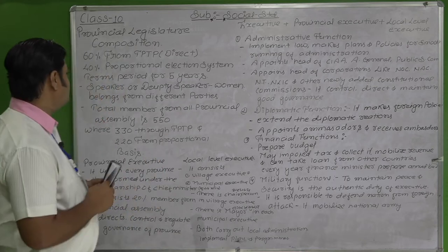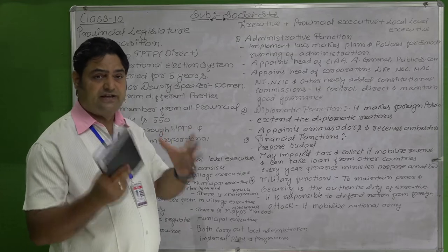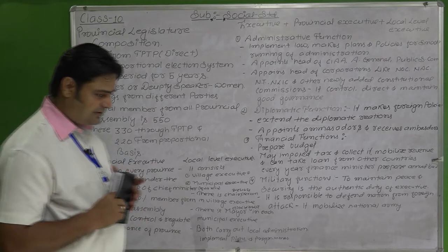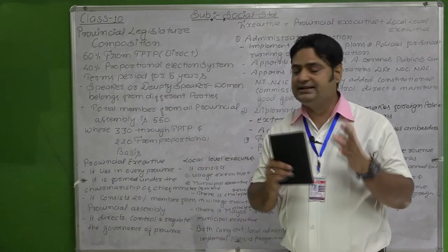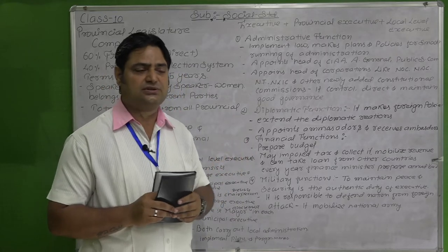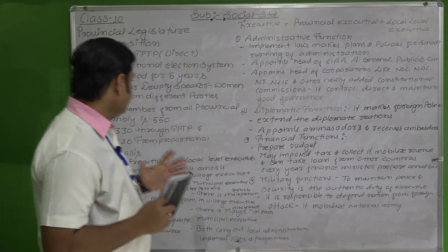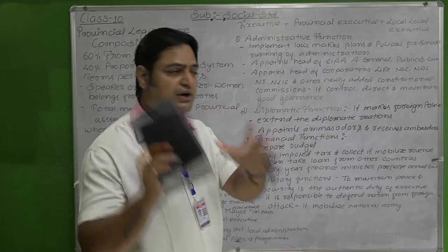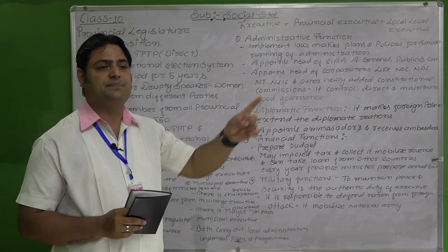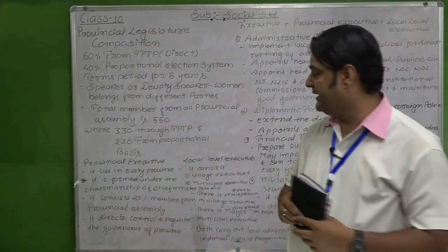The composition of the provincial legislature is very important for the examination. The total members in this provincial legislature consist of 550. Among these 550, 330 are elected by direct election — FPTP, First Past the Post — and the remaining 220 are selected through a different method.